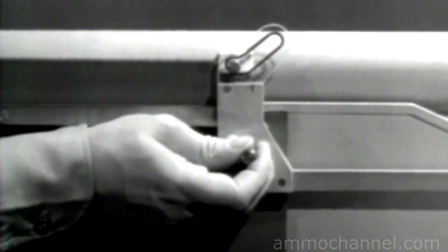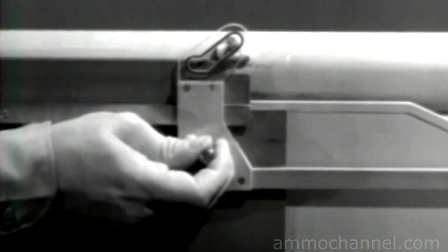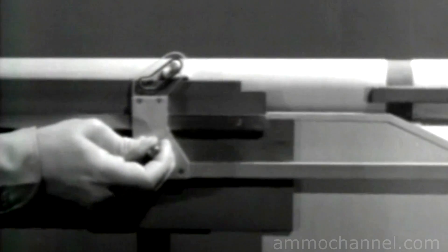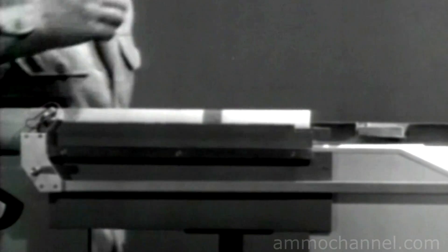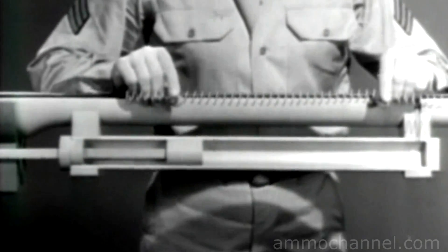The rod moves back and the slot cams the lug up and unlocks the bolt. As the movement continues, the rod pushes the bolt open. But that is only half the job. The bolt has to be closed again.